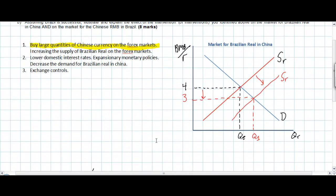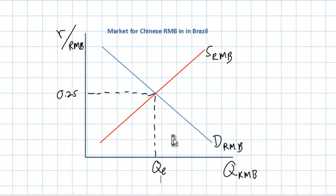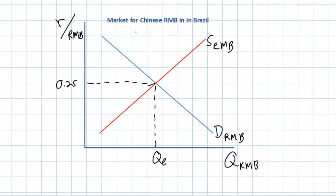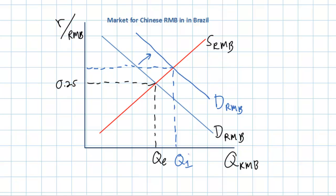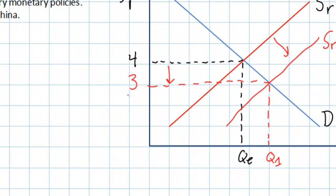Now when the Brazilian central bank buys large quantities of Chinese currency, as we saw happen, this leads to an increase in the supply of Brazilian real. At the same time, we should see the demand for Chinese RMB increase, causing the RMB to appreciate or get stronger against the Brazilian real. We'll now have a new quantity of RMB greater than our original due to the central bank's demand for Chinese currency. The new exchange rate will simply be the inverse of the exchange rate for the Brazilian real: 1 divided by 3, which gives us 0.33 real per RMB.